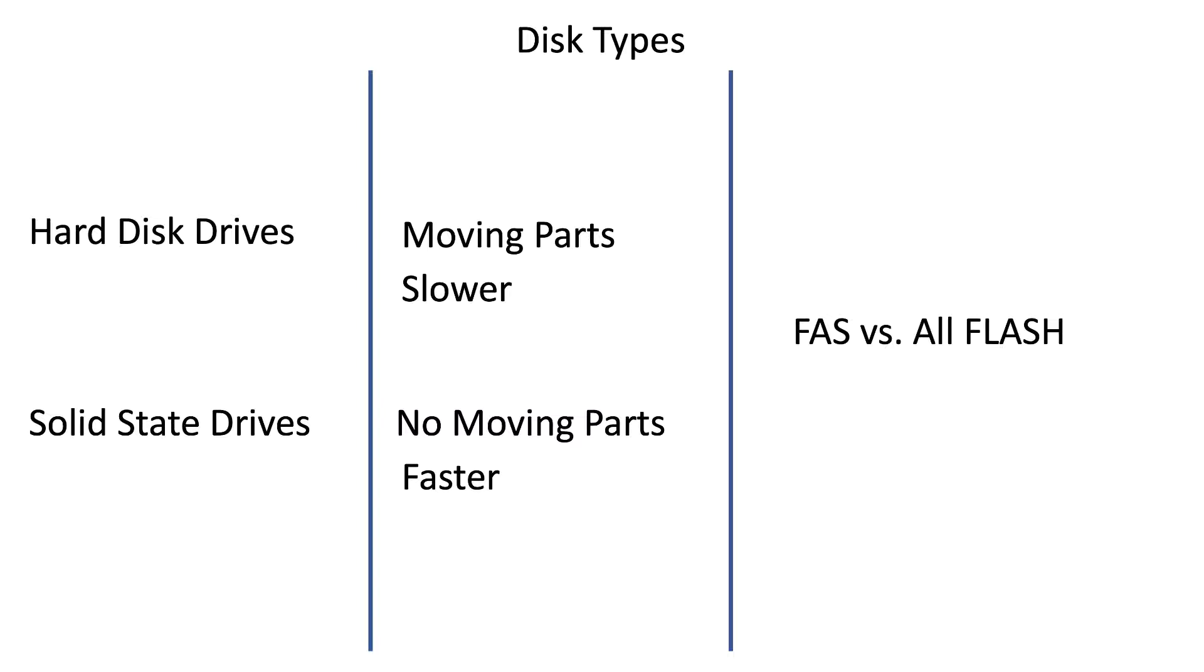A NetApp array that has hard disk drives or hard disk drives and SSDs is called a FAS array. If a controller only has SSDs then it is referred to as an all flash array.